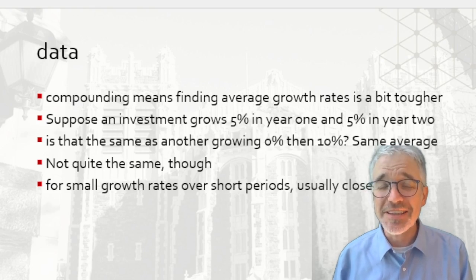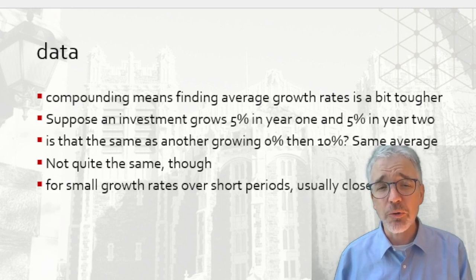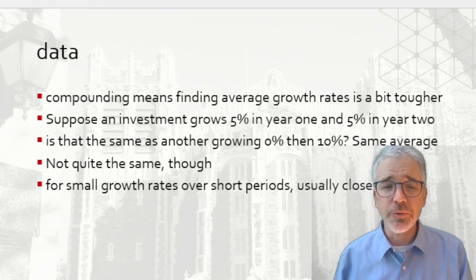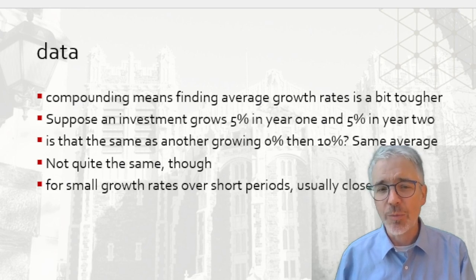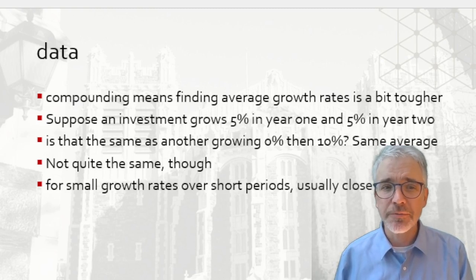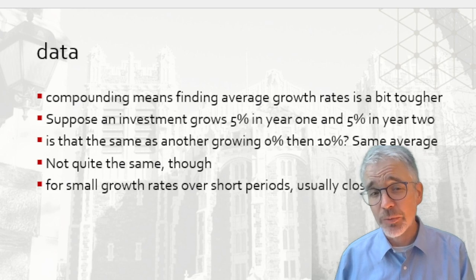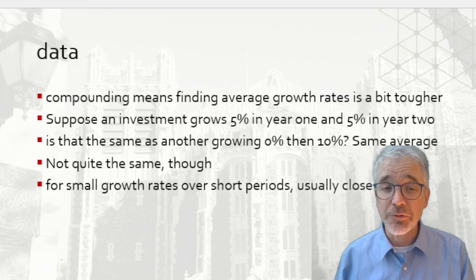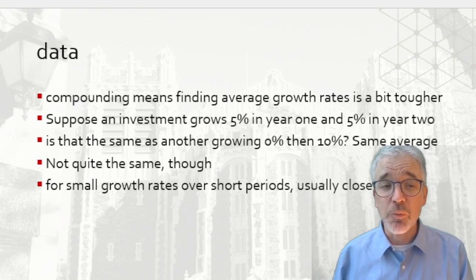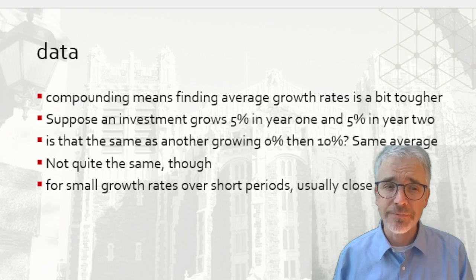Often it's a decent approximation. For small growth rates over short time periods, they will be close. But for longer time periods or larger growth rates, they're not so close. Consider an extreme: an investment that grows 0% then 100% goes from $100 to $200 over two years. Versus one growing 50% then 50% — the same average — which reaches $150 after year one, then $225 after year two. That's 225 versus 200 — a much bigger difference.